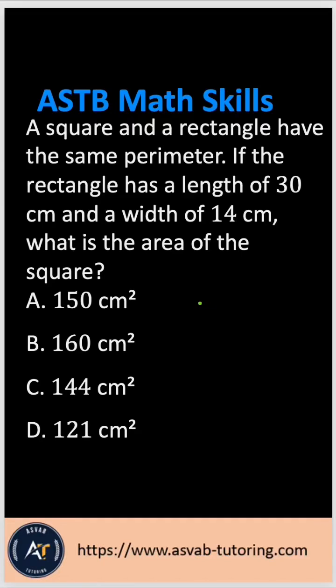Let's practice this aviation officer candidate test ASTB for the Navy, Marine and Coast Guard. The question says here a square and a rectangle have the same perimeter. If the rectangle has a length of 30 centimeters and a width of 14 centimeters, what is the area of the square?